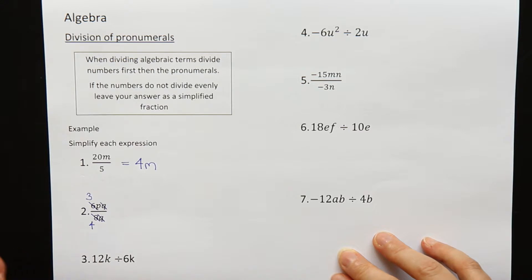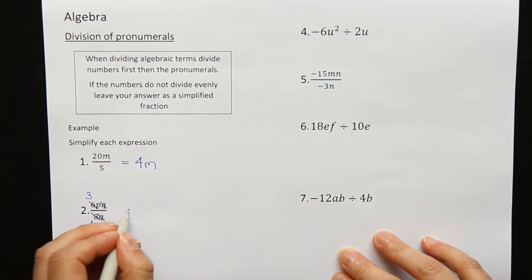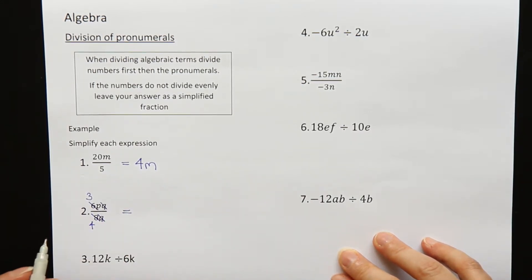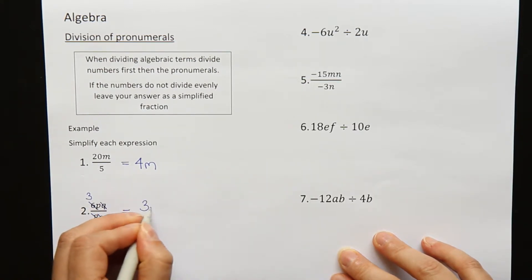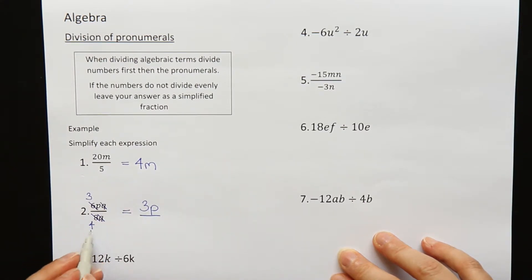So once you've done all your simplifying and canceling, we write down what is left. On the top, I have a 3 and a p. 3p on the top. On the bottom, all that's left is the number 4. So that's my answer. 3p over 4.